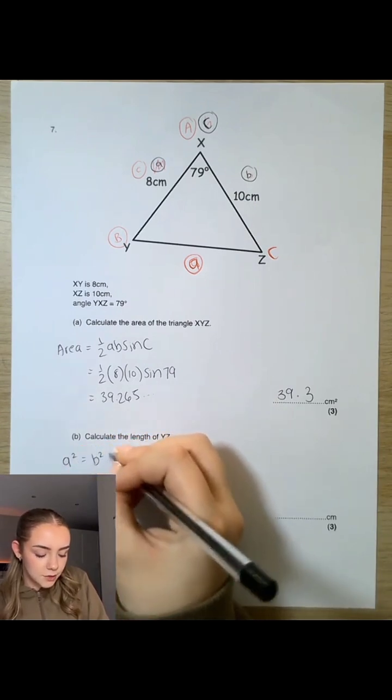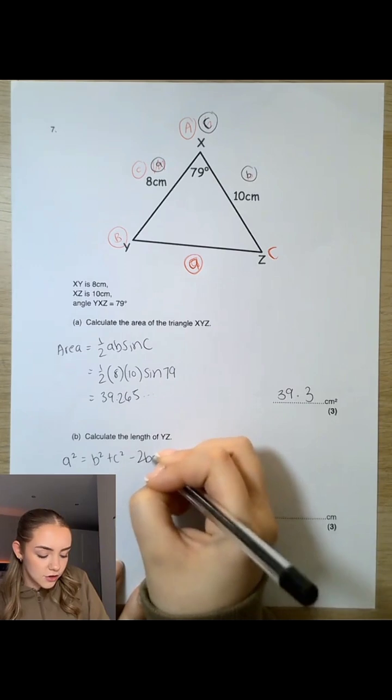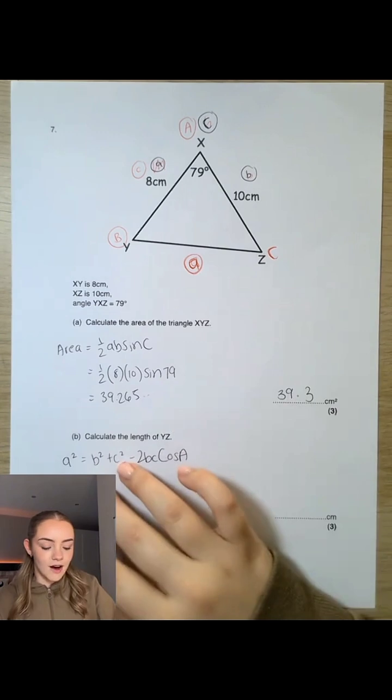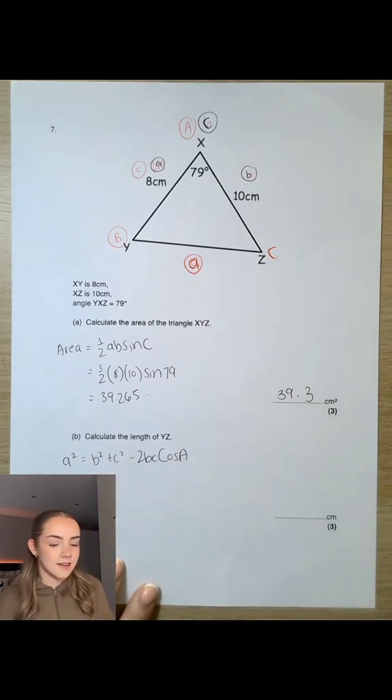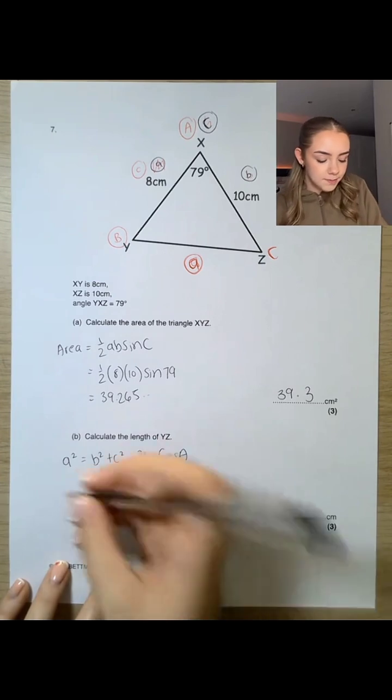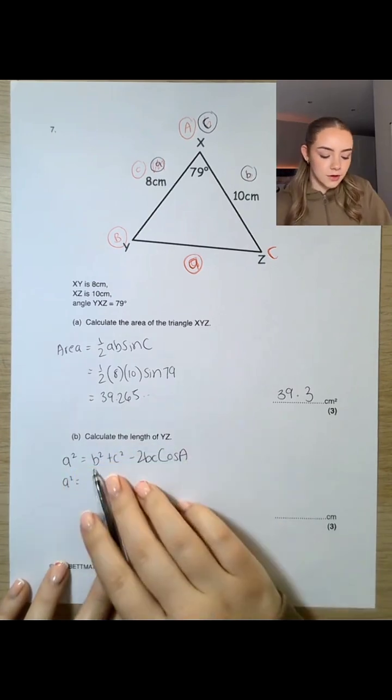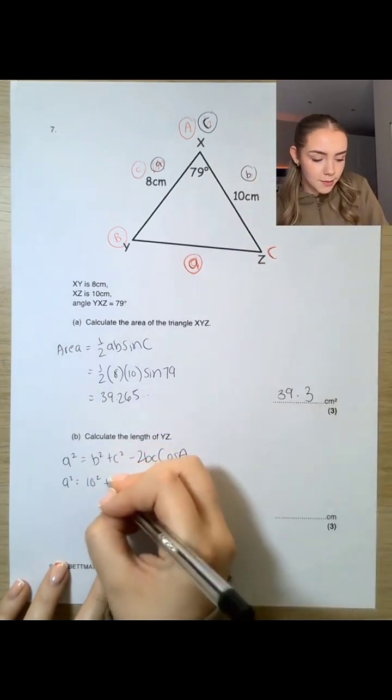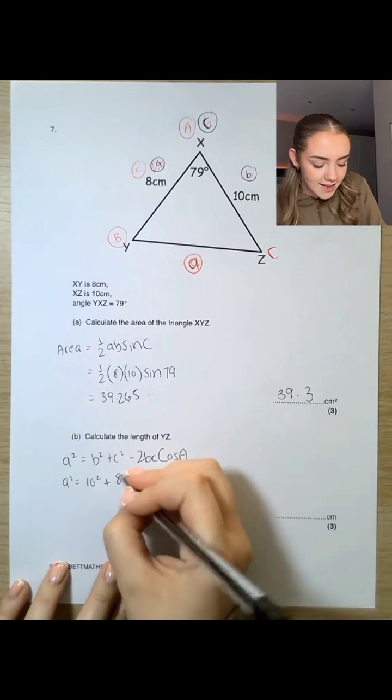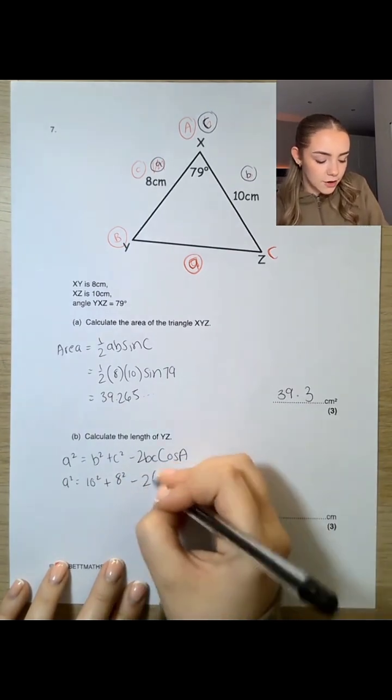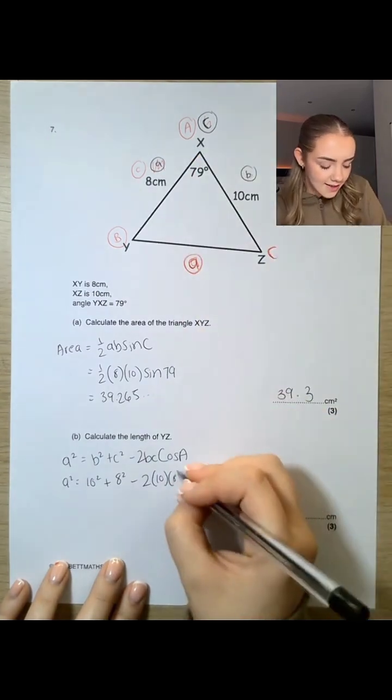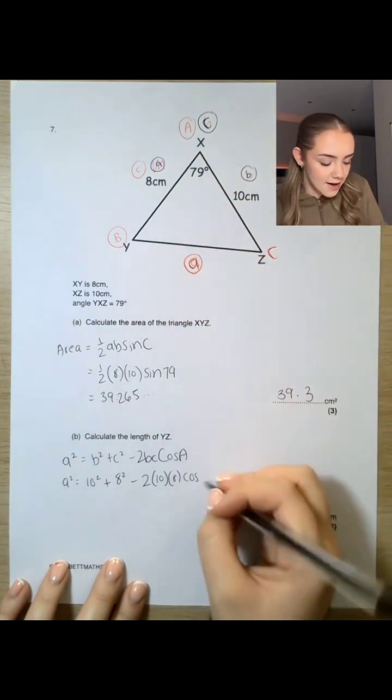That is a² = b² + c² - 2bc cos a. So because a is what we want to find, we've got a as the subject here. Stick everything else in. So a² = b², and b is 10, so that's 10² + c², which is 8², take away 2 times b, which is 10, times c, which is 8, and then cos a, which is 79.